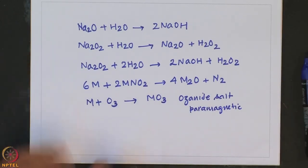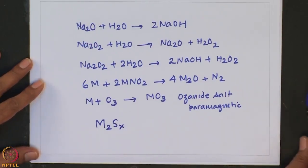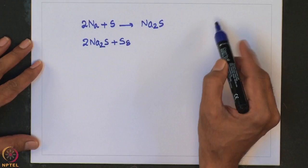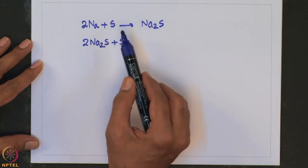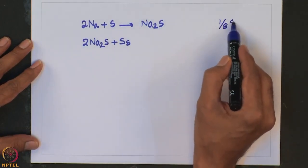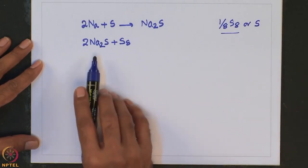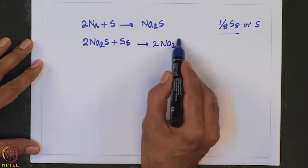With sulfur, alkali metals form alkali metal sulfides and polysulfides. Let me write a few reactions involving sulfur. One can take sodium sulfide and react it with S8. Here, if I consider S as S8, then I should write 1/8 of S8, or simply S. So Na2S reacts with S8 to form Na2S5.